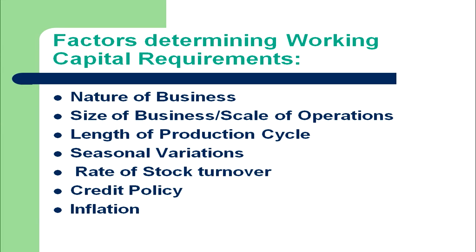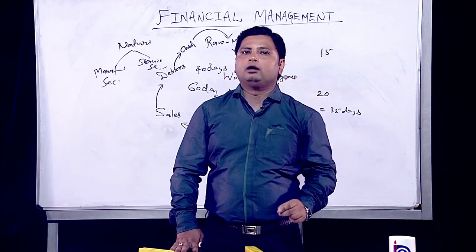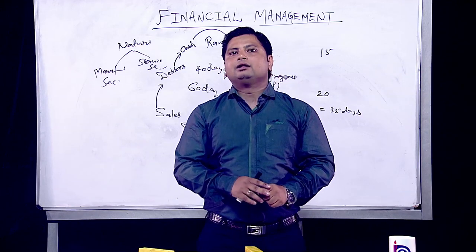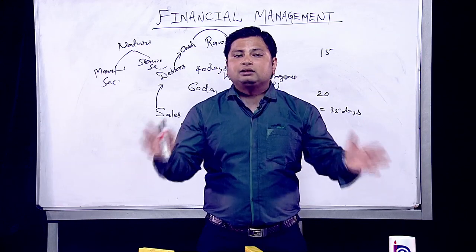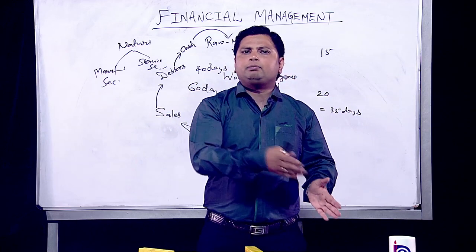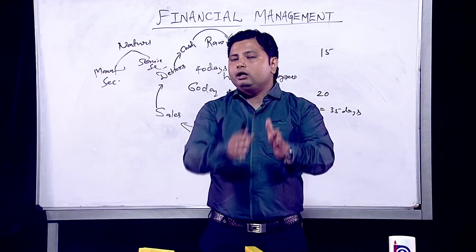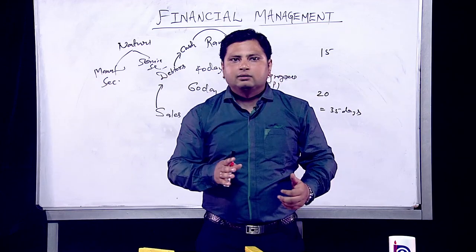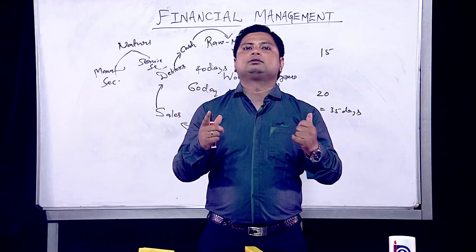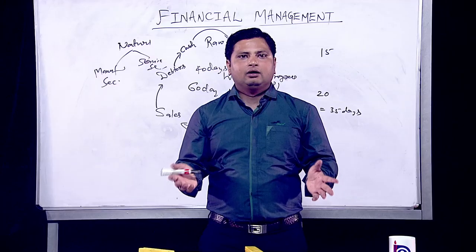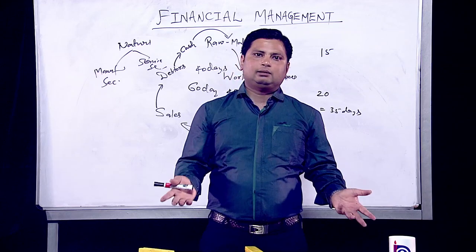The sixth factor is credit policy — strict or liberal. If an organization follows a strict credit policy, say 90% cash sales and 10% credit, cash flow is good and less working capital is required. If it follows a liberal policy — 90% credit and 10% cash — most funds are blocked in debtors, requiring a high amount of working capital. The seventh and last factor is inflation: if inflation is high, the organization requires a large amount of working capital; if inflation is normal, less working capital is required.